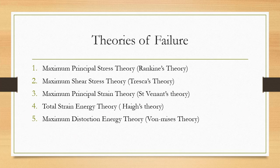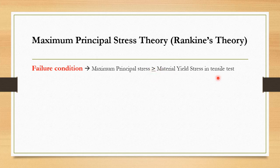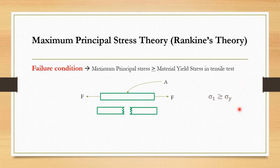The first one is the maximum principal stress theory. Rankine says that whenever the maximum principal stress developed in the component from three-dimensional loading becomes greater than or equal to the material yield stress from a simple tension test, the material will fail. The component fails in a plane that is roughly at 90 degrees to the direction of the applied load.